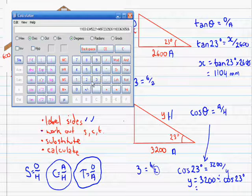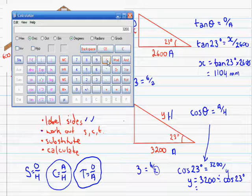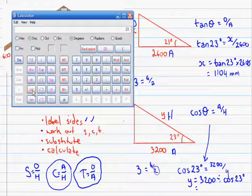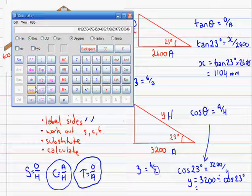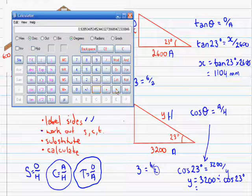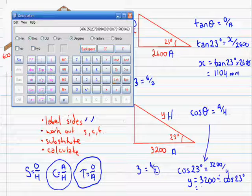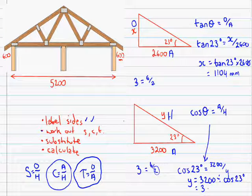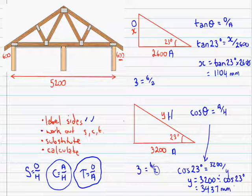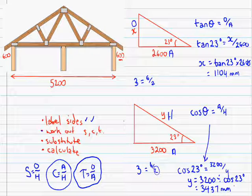Let's get the calculator. 3200 divided by 23 cos. Oh, that doesn't look too good. Better hit equals. Much better. 3476, 3476 millimeters. That's going to be the rafter, just about 3 and a half meters.